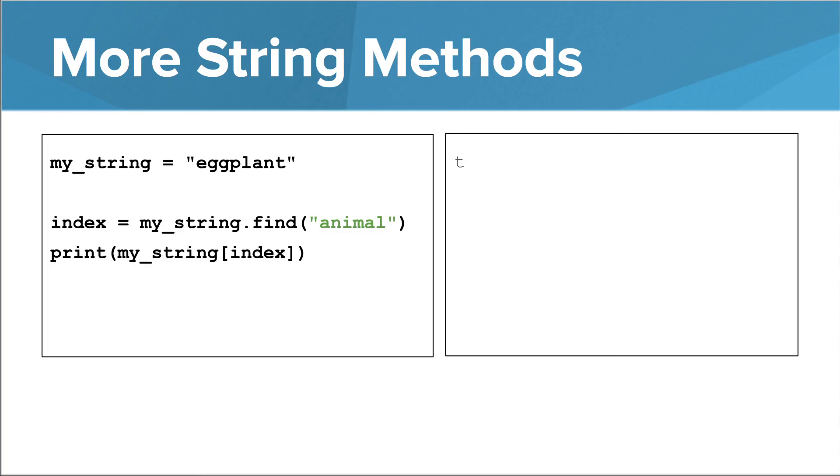So beware of using the index returned by find. You shouldn't expect it to necessarily be usable as an index. In this program, while you might expect this to print a character that is the same as the first character in the argument string, it doesn't because negative 1 isn't meant to be used as an index. That is to say, if you go to index negative 1 in eggplant, you won't find the beginning of an instance of animal.